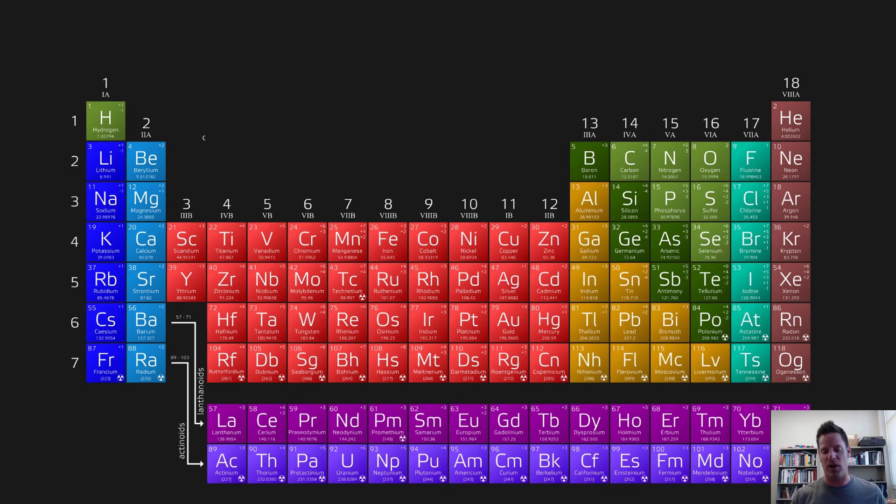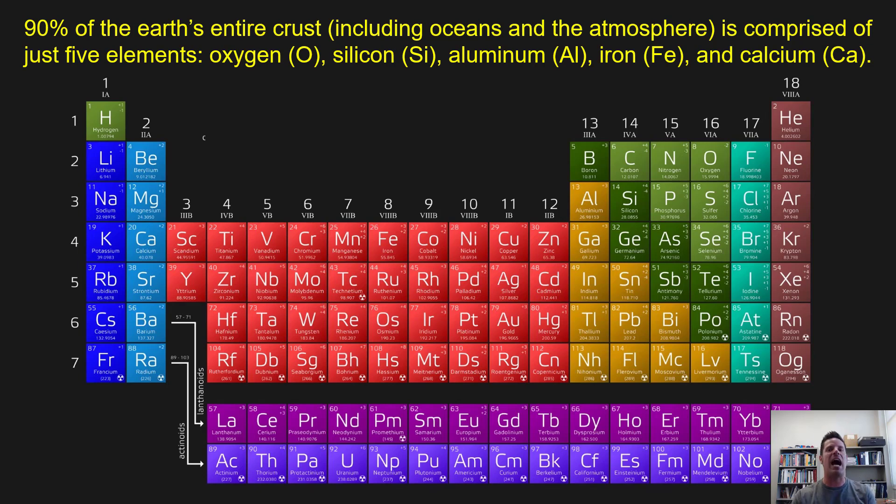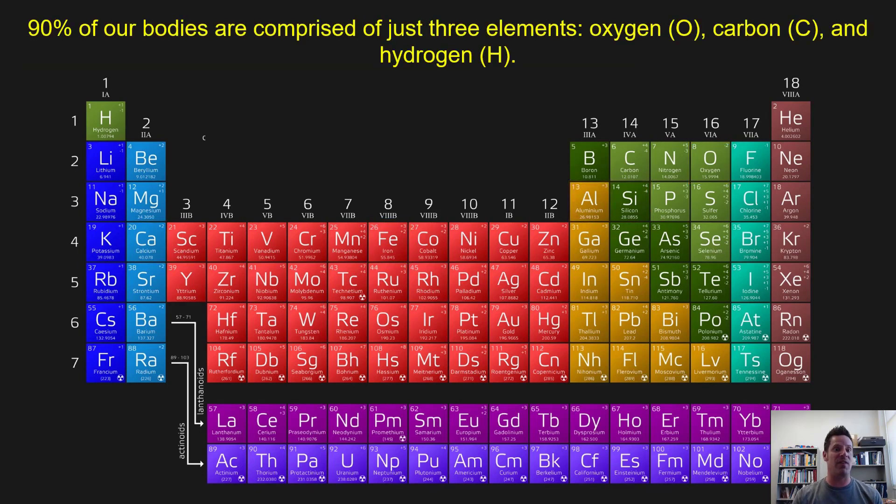For right now though, here's a piece of cool trivia in case you're ever on a quiz show. As it turns out, 90% of the Earth's entire crust, including the oceans and the atmosphere, is comprised of just five elements: oxygen, silicon, aluminum, iron, and calcium, which I boxed in these kind of yellow boxes here. Additionally, 90% of our bodies are comprised of just three elements: oxygen, carbon, and hydrogen. It's just so interesting that when you take just a small handful of elements and bond them together in a variety of different ways, what major differences you can get in terms of overall structure and function. Isn't chemistry awesome?